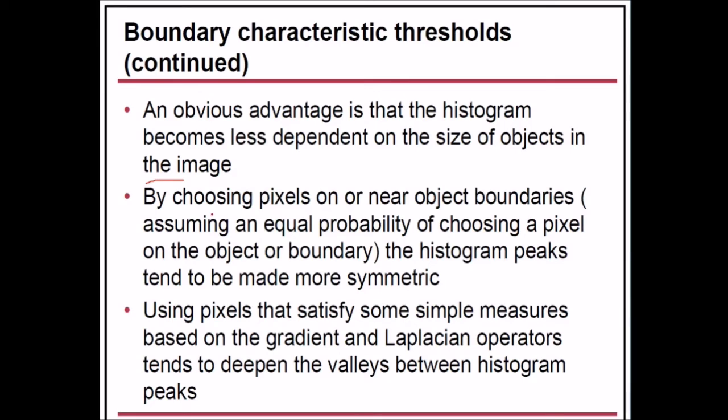By choosing pixels on or near object boundaries, we are assuming an equal probability of choosing a pixel on the object or boundary. The histogram peaks tend to be made more symmetric. Using pixels that satisfy some simple measures based on gradient and Laplacian operators tends to deepen the valleys between histogram peaks.